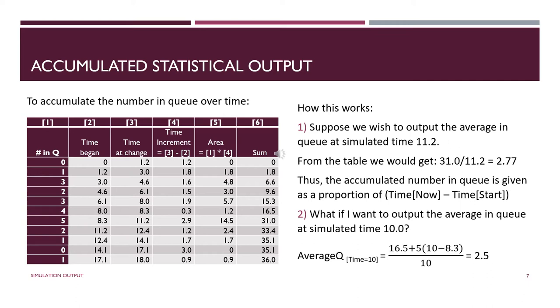Then column four—and you see how the columns are labeled when we use them—column four is the time increment. We get that by taking the value in three minus two, column three minus column two. So the time increment is from time zero to time 1.2, which gives you 1.2. The time increment in the next line is between 1.2 and 3, which gives you a time increment of 1.8.